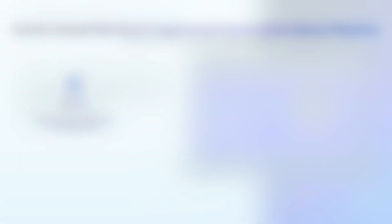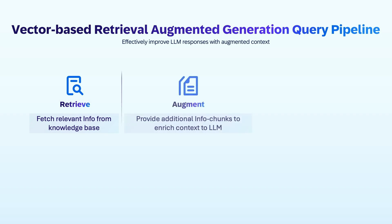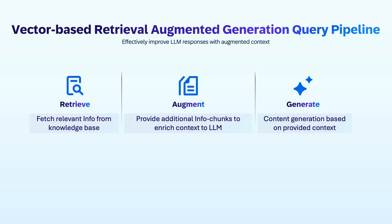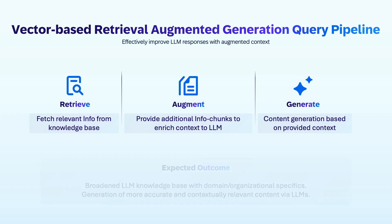The three parts of vector-based retrieval augmented generation query involve fetching retrieval information from the knowledge base, providing additional information chunks to enrich context to the large language model, and generating content based upon the provided context.